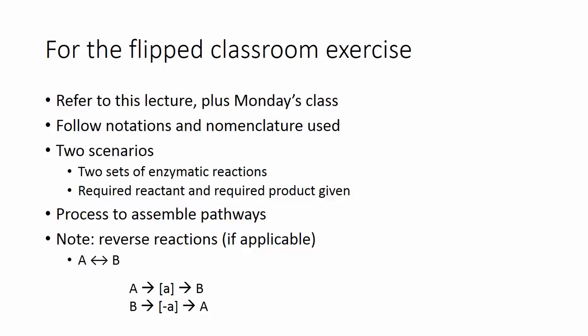For the flipped classroom exercise, you'll refer to this lecture plus Monday's class. Follow the notations that we used and the nomenclature we used. And you'll be given two scenarios, two sets of enzymatic reactions. You'll be given, in each case, a required reactant and a required product. And then what you do is assemble pathways. And make sure you note, and we didn't do any in this small example, but note reverse reactions if applicable.